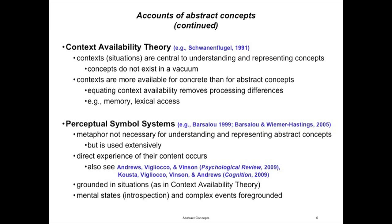The last theory I'm going to talk about is perceptual symbol systems, which is kind of the approach that I take. In the original proposals of this theory, there were various arguments about how abstract concepts would be handled within this framework. One particular argument was that metaphor is not necessary, the way Lakoff and Johnson argue, because it goes back to the projection problem Murphy noted — there's already structure about abstract concepts that can be used to represent them.